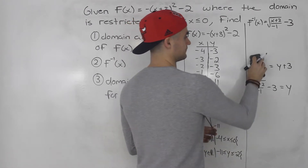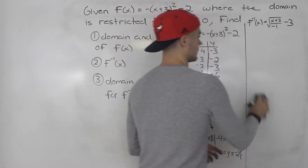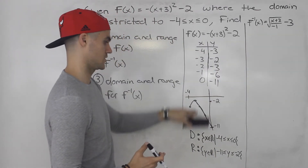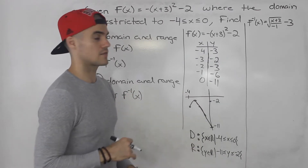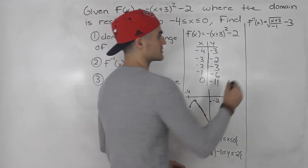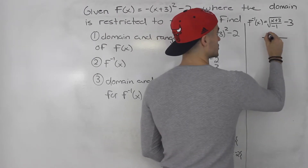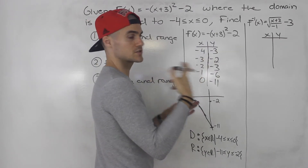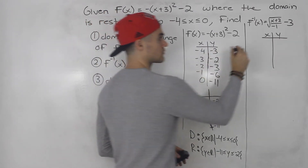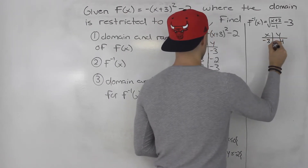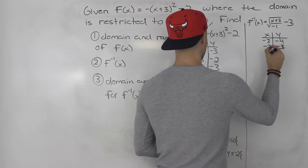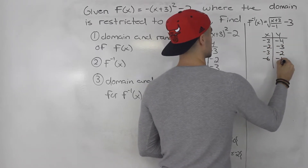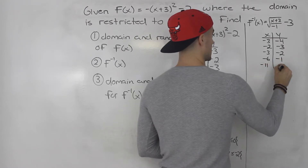That's the equation of the inverse. However, it's not going to be fully that because the function was restricted, which means the inverse is going to be restricted as well. So we take the table for the function and write out the table for the inverse by interchanging x and y. So negative 4, negative 3 becomes negative 3, negative 4; negative 3, negative 2 becomes negative 2, negative 3; negative 2, negative 3 becomes negative 3, negative 2; negative 6, negative 1; and then negative 11 and 0.